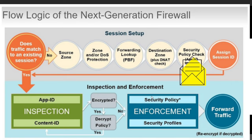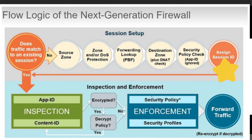The security policy check then happens to verify NAT setup, and the firewall allows or denies based on policy configuration. The firewall then assigns a session ID based on all these checks and stores details such as source IP, destination IP, source port, destination port, protocol, etc. into the session table. Next, the inspection and enforcement modules come into play — application identification, Content-ID, and security policy, which we have already discussed in detail.